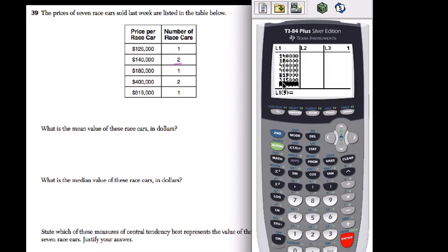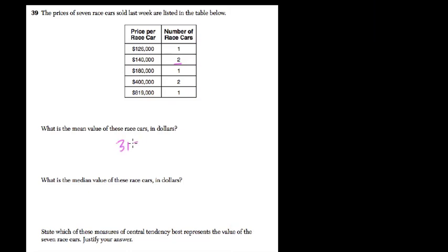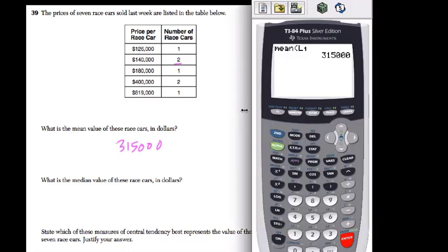Here though, it gave me the value in the list. I don't like that. Delete that value. I'm going to quit out of this because that looks too confusing. So I'll hit second stat again, scroll over to math. The mean of list one. Second one is list one. And here's my mean: $315,000. So don't forget we entered the frequencies of each item.